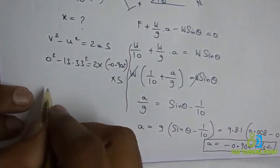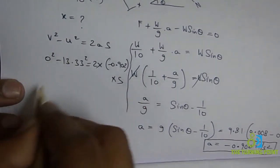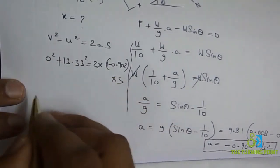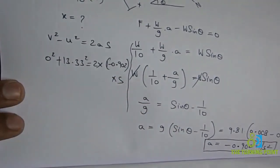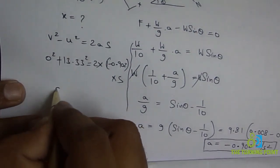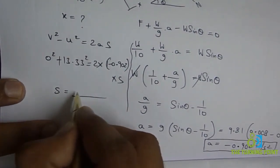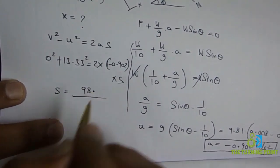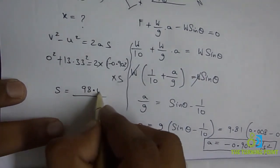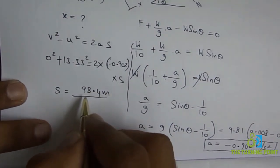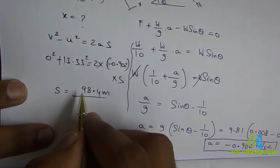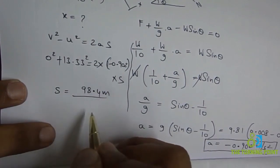Minus minus gets positive. From that I can find the value of S. When you solve it, you will get 98.4 meters, which is the distance the train will travel before stopping.